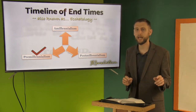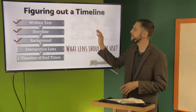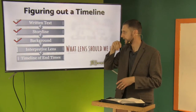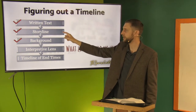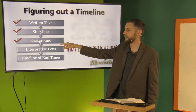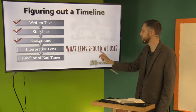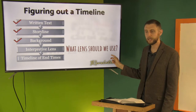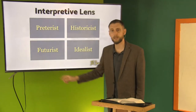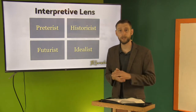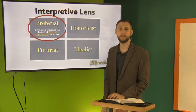Let's figure out what postmillennialism means by going back to this little chart. We've covered written text, storyline, and background. We're right here at the interpretive lens — what lens should we use? Last week, when we looked at premillennialism, we chose futurist. Well, for this week, when we're talking about postmillennialism, our interpretive lens is going to be preterism.